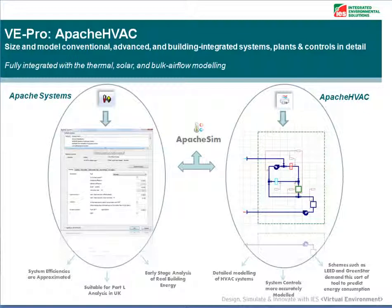Apache Systems ideally controls systems to condition spaces exactly to set points via predefined HVAC system type algorithms, with minimal room, system and plant inputs within Apache Sim. You will see a more accurate representation of how the controls and systems are working to keep the spaces within comfortable conditions using the Apache HVAC module.